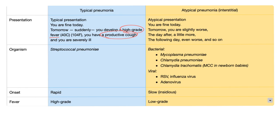Atypical, on the other hand — also known as interstitial — has an atypical presentation. You're fine today, but then you're slightly worse the next day, a little more worse the day after, and even worse the following day, and so on. You feel progressively crappier and crappier.